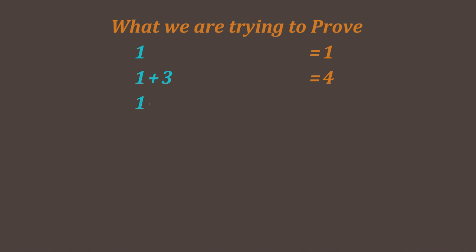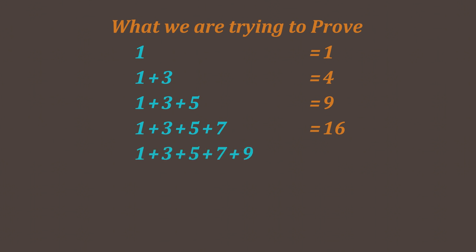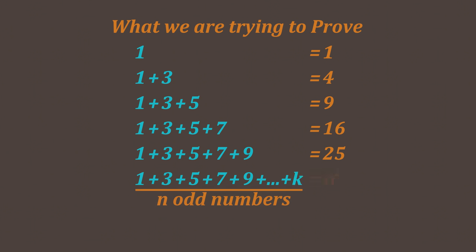Let's look at what we are going to try to prove. If I take the first odd number, 1, that's not very interesting. If I take the first two odd numbers, 1 and 3, and add them together, I get 4. If I take the first three odd numbers, which are 1, 3, and 5, and I add them together, I get 9. If I take the first four odd numbers and I add them together, I get 16. So it seems as though if I add together the first n odd numbers, I happen to be getting n squared.